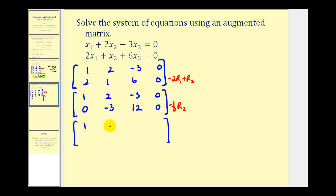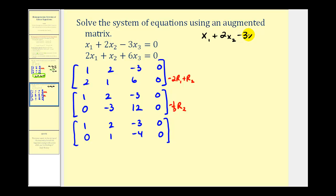The first row stays the same. The second row becomes: zero, one, negative four, zero. Now let's rewrite this as a system of equations. The first equation didn't change: x sub one plus two times x sub two minus three times x sub three equals zero. The second equation is now x sub two minus four x sub three equals zero.